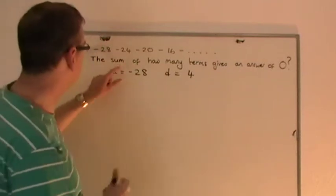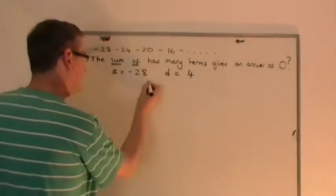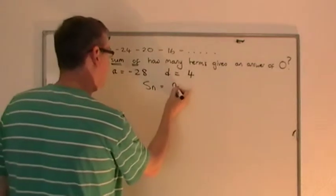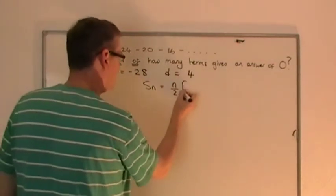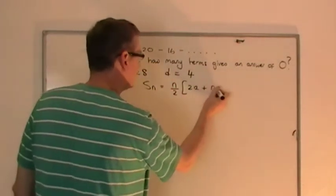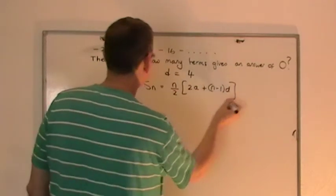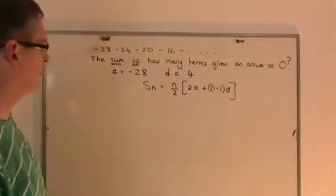Now I'm talking about the sum of, so obviously we need to be quoting the sum of formula. S_n equals n over 2, 2a plus n minus 1 d's. So there's the sum of formula.